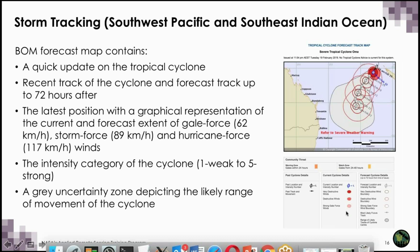The color of the solid circle surrounding the current position indicates wind strength — dark red indicates very destructive winds, a lower shade of red means destructive winds, and pinkish means strong gale force winds. The forecast extent of winds is depicted by different color lines indicating gale force at 62 km/h, storm force at 89 km/h, and hurricane force at 117 km/h. A gray uncertainty cone depicts the likely range of movement of the cyclone up to 72 hours from the time of issue.